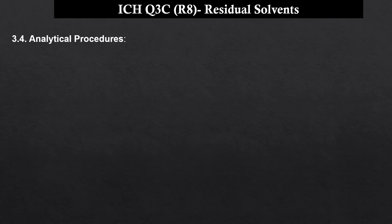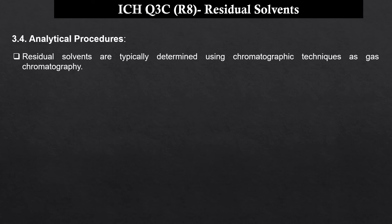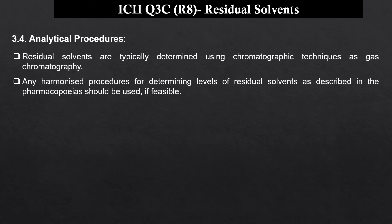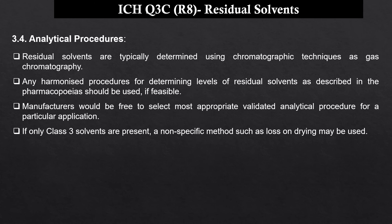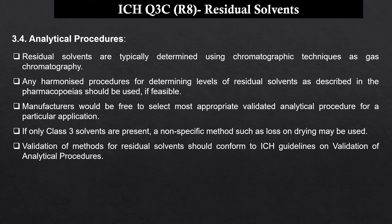Looking at the analytical procedures, residual solvents are typically determined using chromatographic techniques like gas chromatography. Any harmonized procedure for determining levels of residual solvents in the pharmacopoeias can be used; however, manufacturers are free to select the most appropriate validated method. If only class 3 solvents are present, a non-specific method such as loss on drying can also be used. Validation of methods for residual solvents should conform with the ICH guideline on validation of analytical procedures, i.e., ICH Q2.